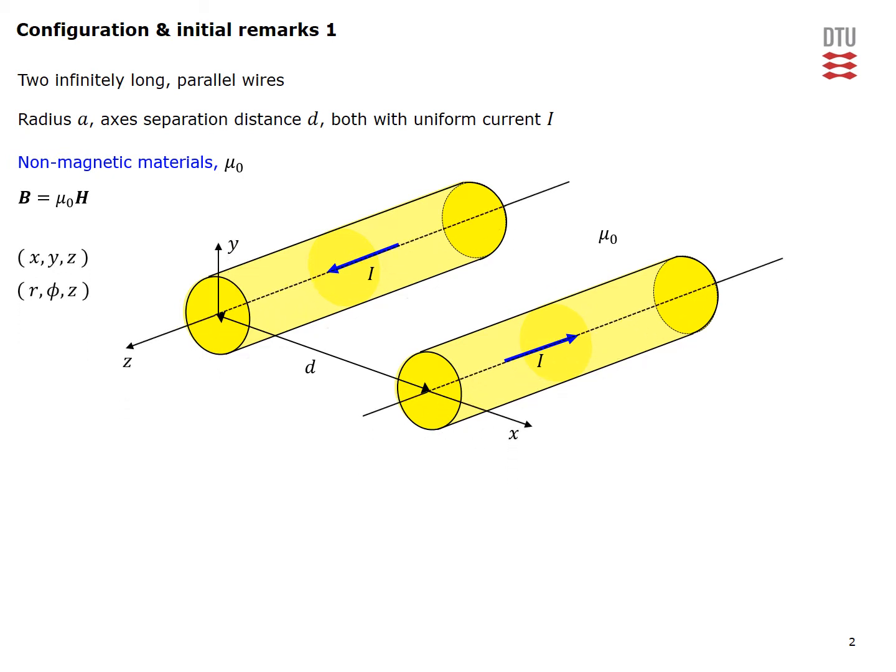We introduce a rectangular x, y, z coordinate system as shown on the figure to the right so that our two wires are infinitely long along z direction.